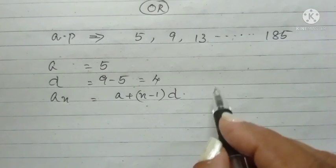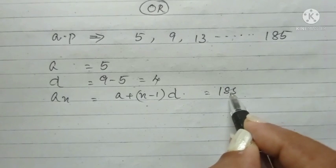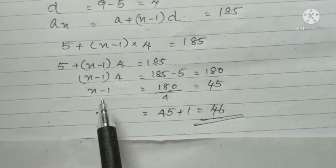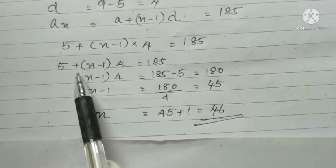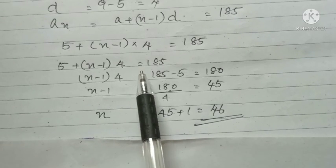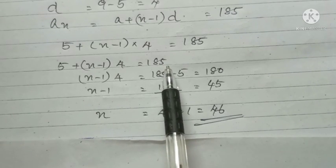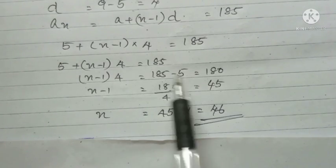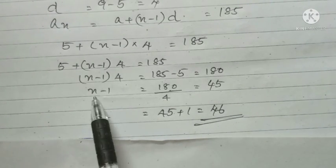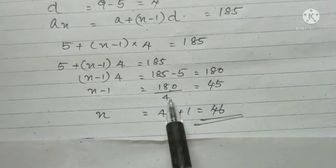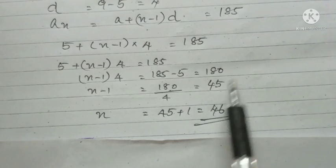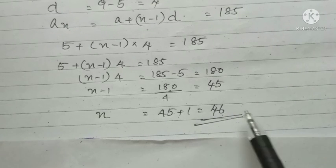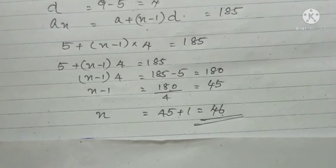And the nth term, it is given as 185. Substituting the value, by substituting each value, we will get 5 plus n minus 1 into 4 equal to 185. n minus 1 into 4 equal to 180. n minus 1 equal to 180 divided by 4 equal to 45. n is equal to 45 plus 1 equal to 46. Therefore, the correct answer is 46.